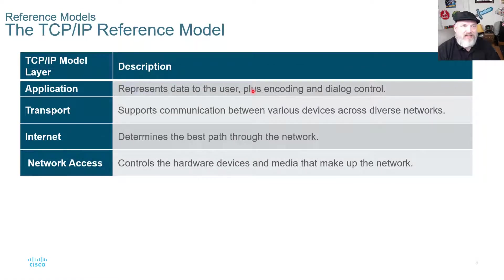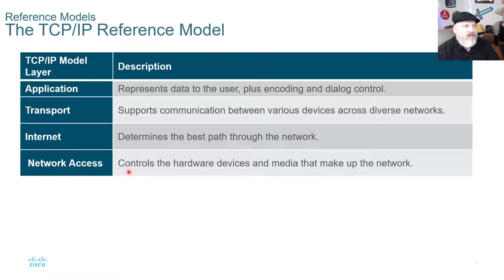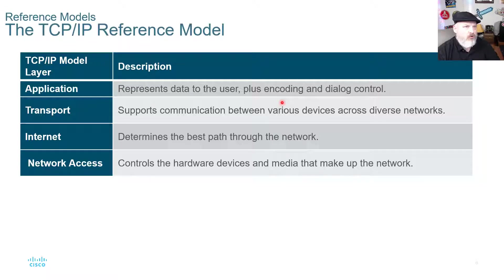Next we'll take a look at the TCP/IP reference model — it has four layers, simplifying from the OSI model. The four layers are: network access, which controls the hardware devices and medium; internet, which determines the best path through the network; transport, which supports communication between various devices across diverse networks; and application, which represents data to the user plus encoding and dialogue control.